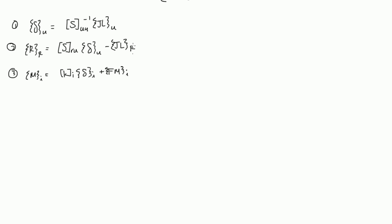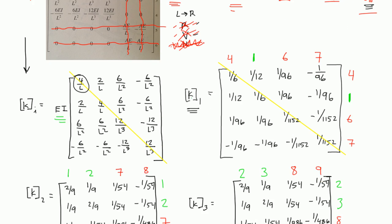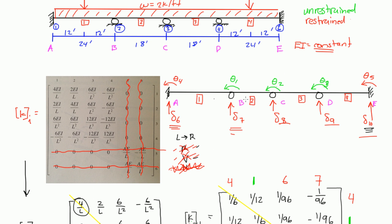The very first thing we want to do is figure out what our deformations are for our unrestrained degrees of freedom. If we look back at this degree of freedom diagram, what are the deformations happening at the unrestrained degrees of freedom? Here we have 1, 2, and 3 unrestrained degrees of freedom, and they're all rotational ones. In other words, what are the rotational deformations happening at 1, 2, and 3?